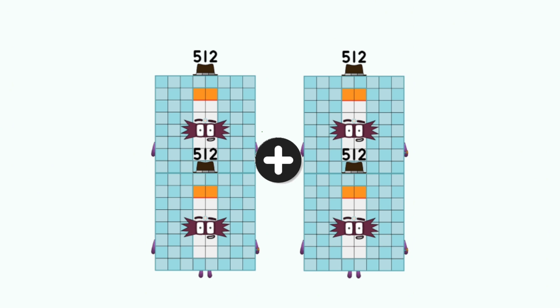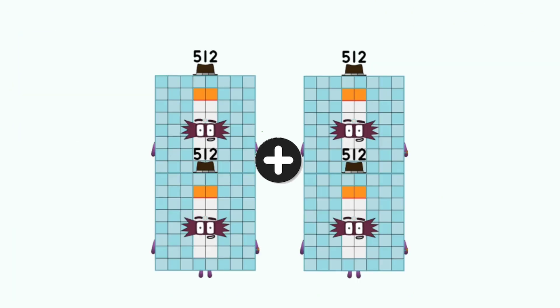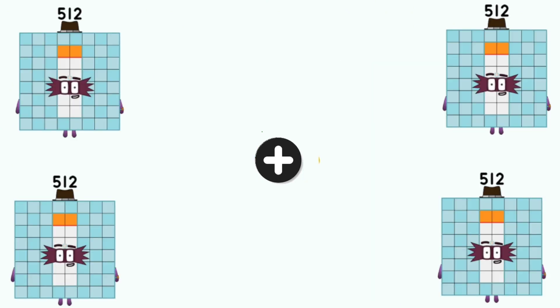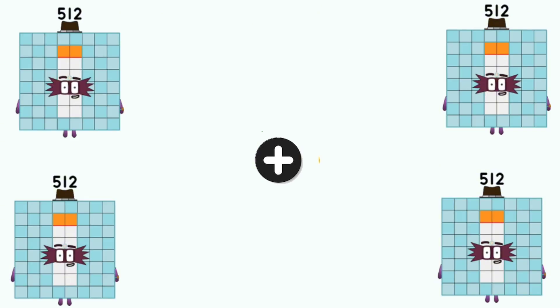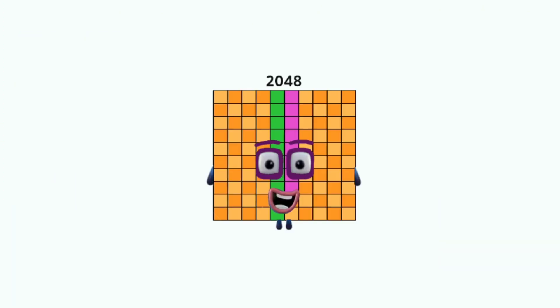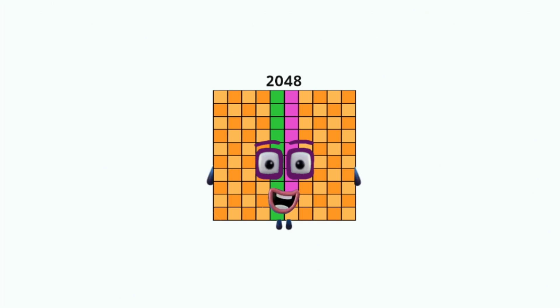Number blocks: five hundred twelve plus five hundred twelve, and as many as four times, equals two thousand forty-eight.